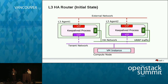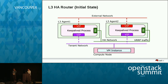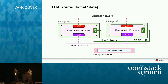When you create an HA router, it gets scheduled on various L3 agents, and an HA network is created for each tenant, used for HA purposes. A router namespace is created on each L3 agent containing various QR ports and an HA port. This router namespace is created on all multiple L3 agents.